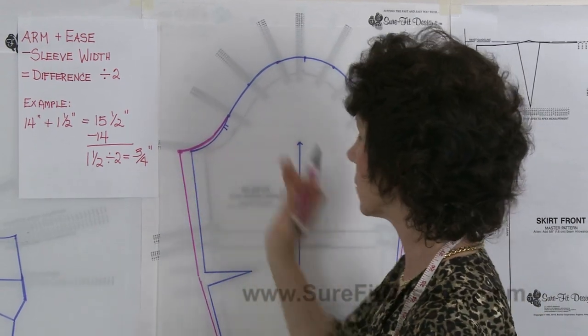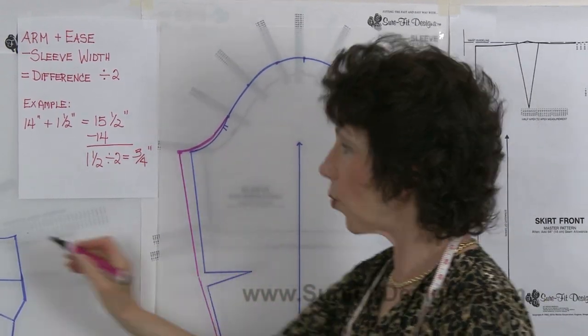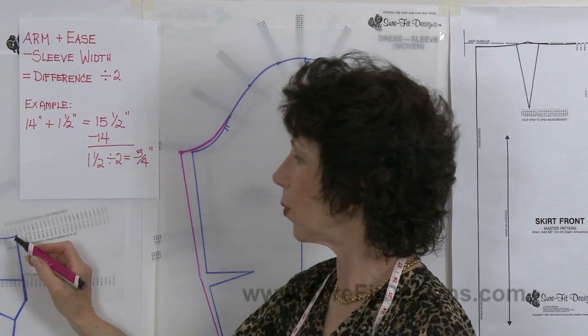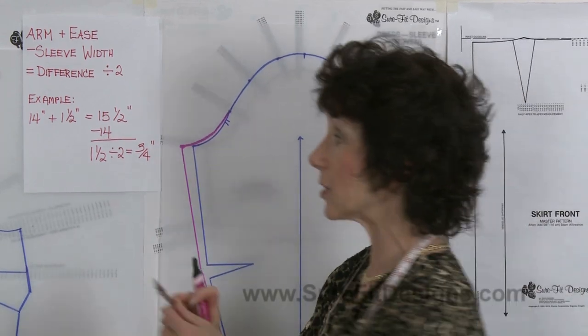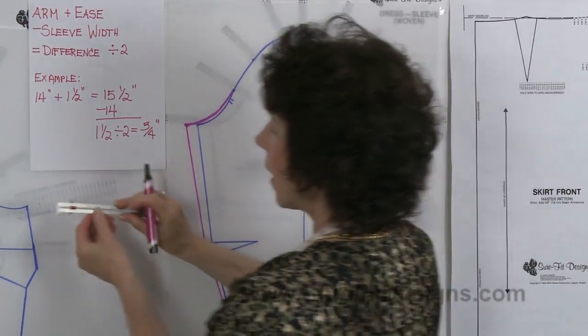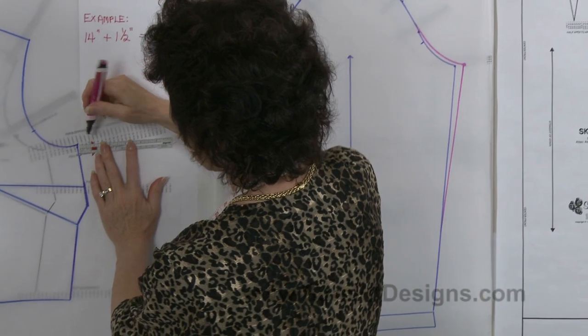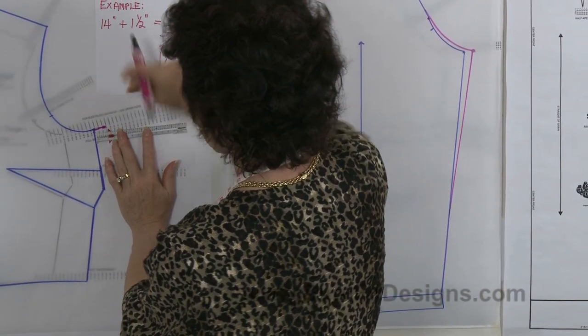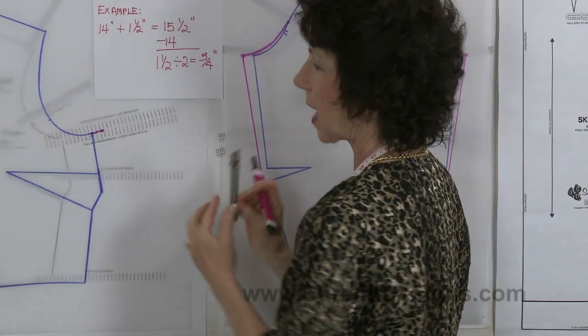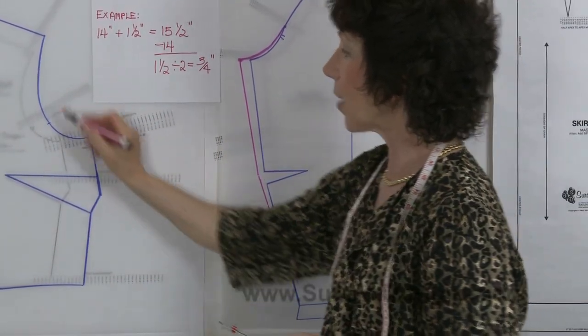But whenever you get beyond an inch of additional ease across your sleeve, you will need to make your armhole bigger. And so because I added three quarters of an inch on each side of the sleeve, I must also add three quarters of an inch on the underarm of the bodice, and I need to do that on the back bodice as well.